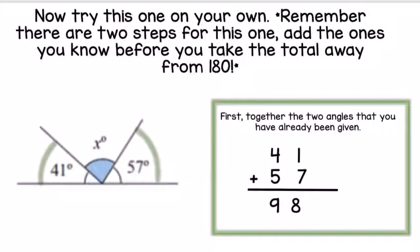Welcome back. For this one, the two angles we've been given are 41 degrees and 57 degrees. Even though they're opposite, they need to be added together to make the total of what we already know. Using column addition, 41 add 57: 1 add 7 is 8, and 4 add 5 is 9. The two angles added together make 98 degrees.